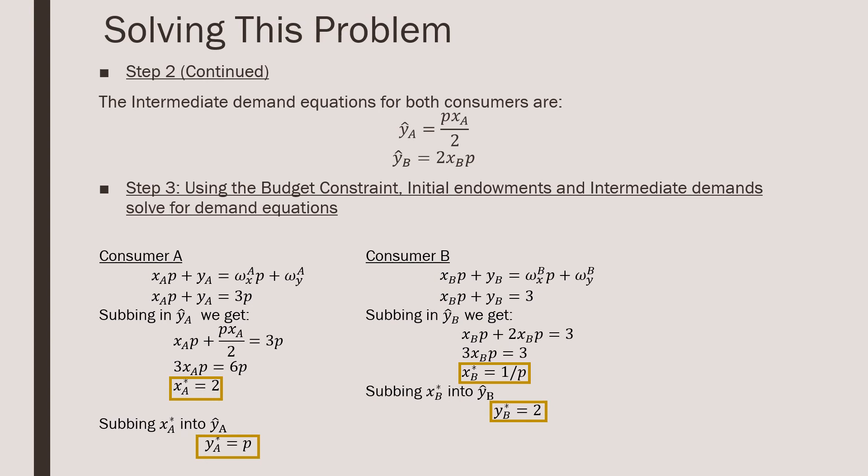Step number three: using the budget constraint, initial endowments, and intermediate demands, we're going to solve for demand equations. We're going to take these intermediate demands, just like in our standard utility maximization case, and plug them into each of our consumer's budget constraints. These endowments are important because they determine the size of the budget and how it's spread out across consumers. Subbing in the respective Y hats, we find that for consumer A, his demand for X is two, a constant number. And subbing this XA into his Y hat, we find that this equals P.